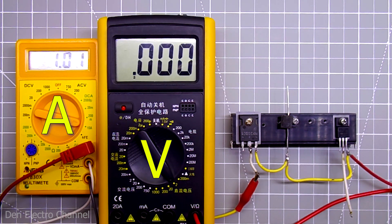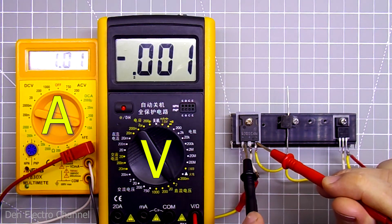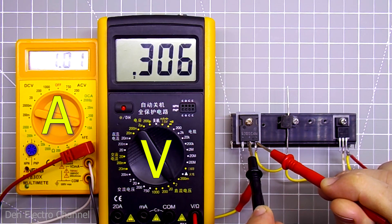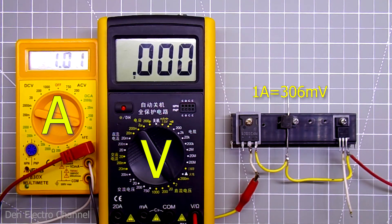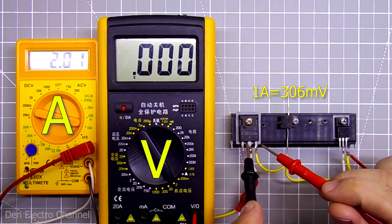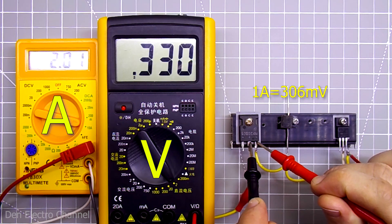First, I set the current to 1 amp, the voltage drop was 306 millivolts. I increase the current further, I set it to 2 amps. The voltage drop becomes more than 330 millivolts.